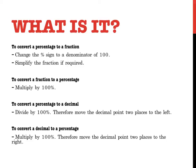To convert a percentage to a fraction, we simply change the percentage sign to a denominator of 100 and then simplify if we need to. To convert a fraction to a percentage, we multiply by 100%. To convert a percentage to a decimal, we divide by 100%. To convert a decimal to a percentage, we multiply by 100% and move the decimal point two places to the right. Write that down and then I'll show you what I mean.